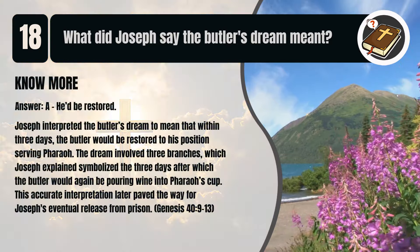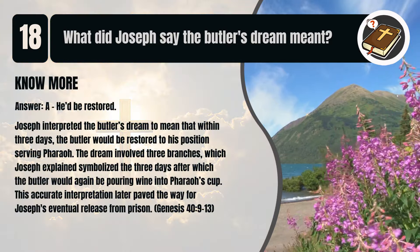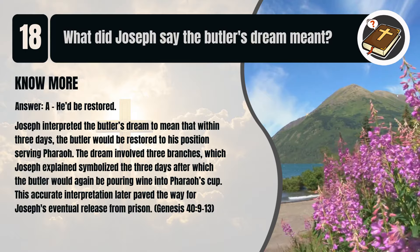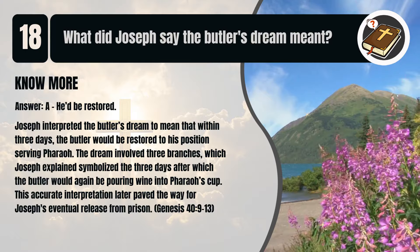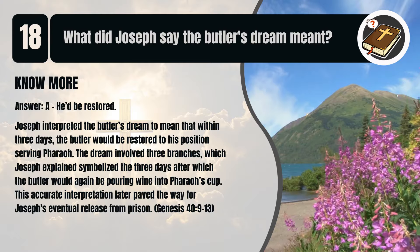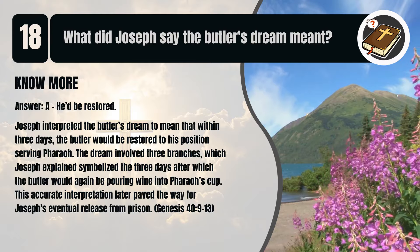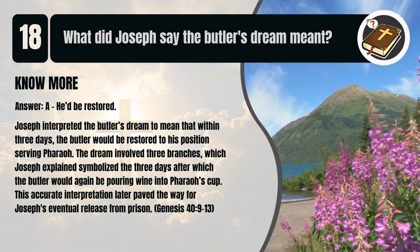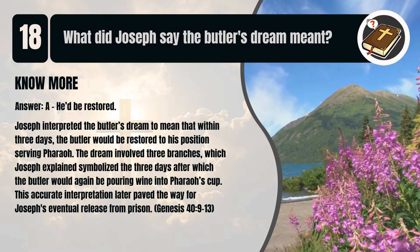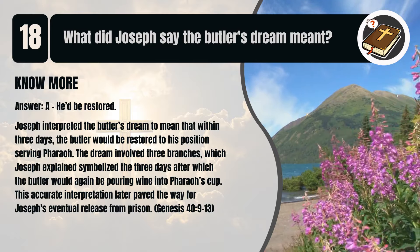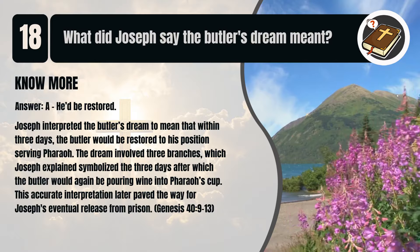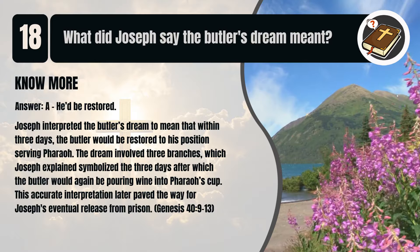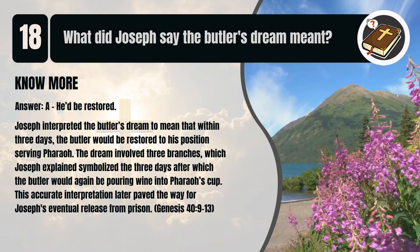That's A. He'd be restored. Joseph interpreted the butler's dream to mean that within three days, the butler would be restored to his position serving Pharaoh. The dream involved three branches, which Joseph explained symbolized the three days after which the butler would again be pouring wine into Pharaoh's cup. This accurate interpretation later paved the way for Joseph's eventual release from prison. Genesis chapter 40 verses 9 to 13.